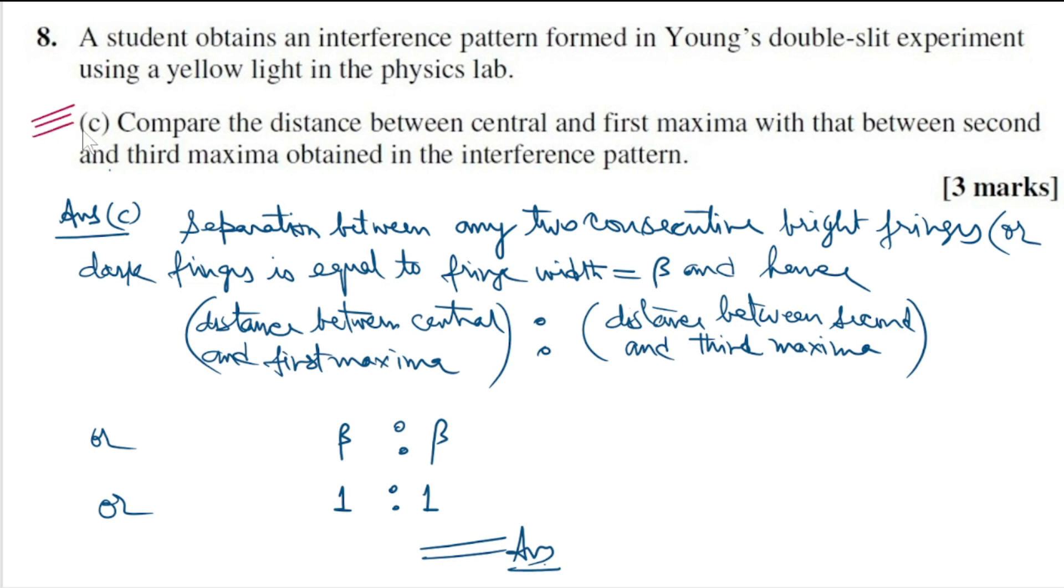In part C of the problem, we are supposed to compare the distance between the central and first maxima with the distance between the second and third maxima. We already know that the separation between any two consecutive bright fringes or dark fringes equals the fringe width. And hence the distance between the central and first maxima to the distance between the second and third maxima should be given by β to β. This is by definition, and hence the ratio should be 1 is to 1.